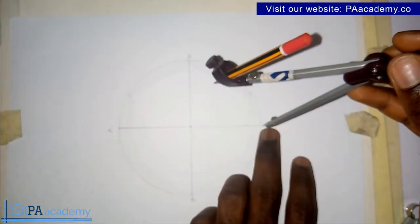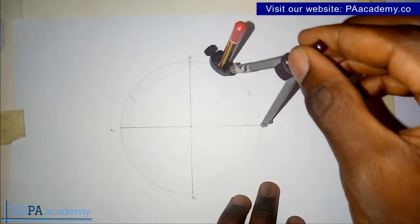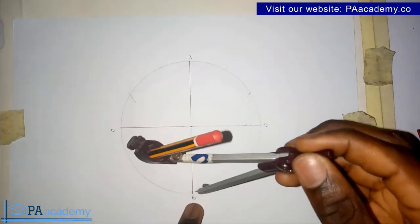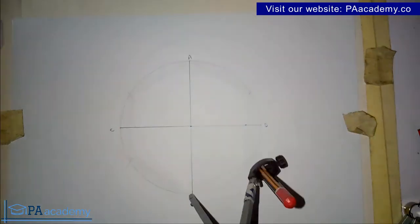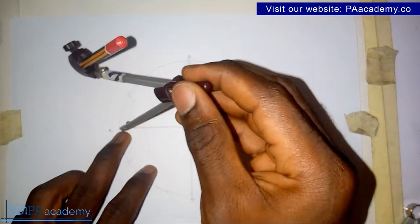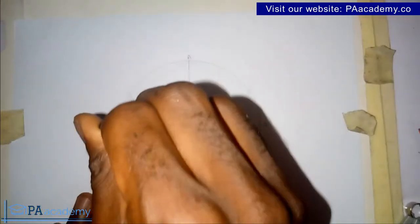The same thing, let's do it to point D now. I'll draw an arc on the other quadrant. I'm on point B, I'll draw an arc on the circumference. Now I'm on point C, draw an arc and then draw another arc.